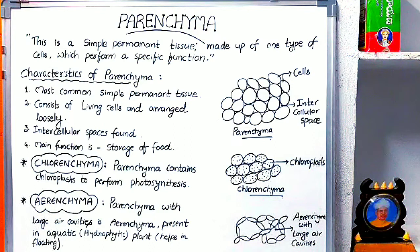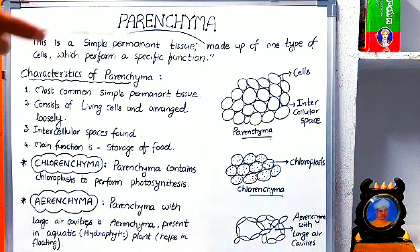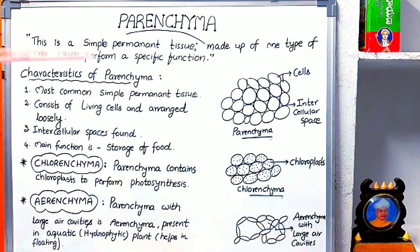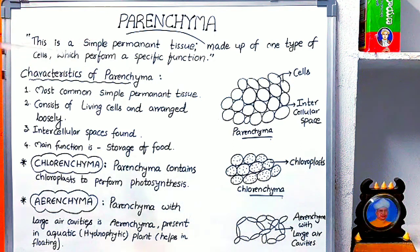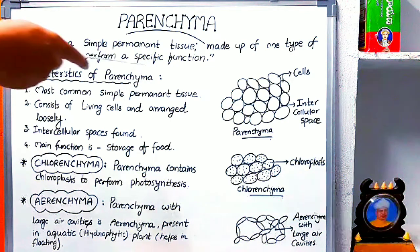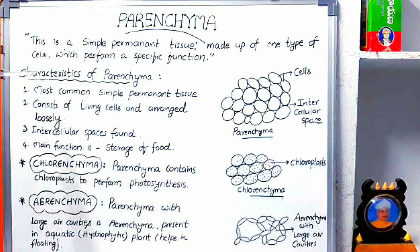Welcome. Today I am going to explain about parenchyma. Parenchyma is a simple permanent tissue which is made up of only one type of cells which perform a specific function. Parenchyma is a tissue — tissue means a group of cells. The cells present in parenchyma tissue are the same type of cells and they are going to perform a specific function.